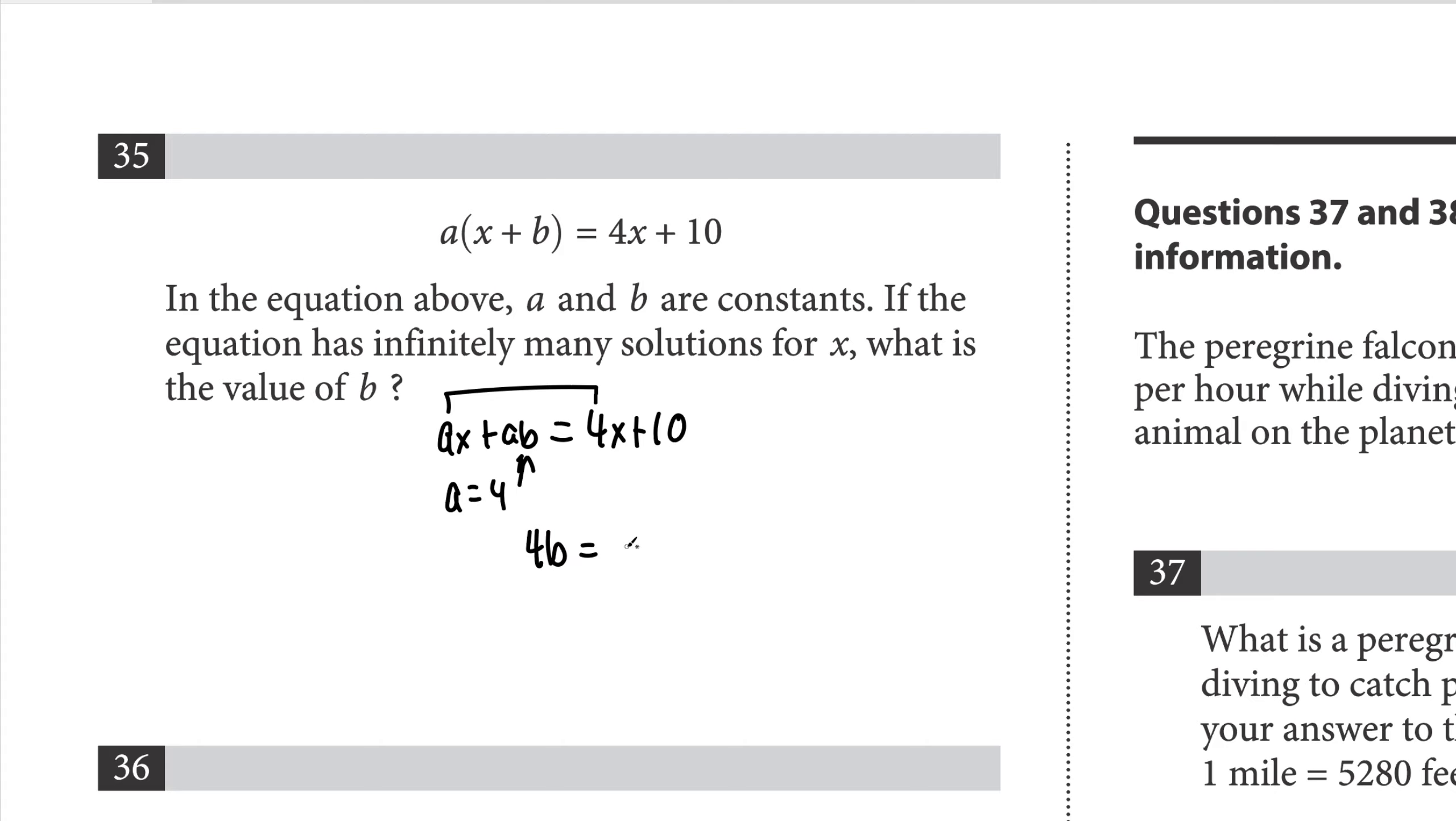So that'd be 4b equals 10, because then we associate the b term with the constant. So b equals 10 over 4, which is 5 over 2.